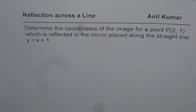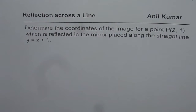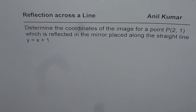I'm Adil Kumar. We are trying to explore how to find the image of a point when it is reflected across a line, and this line is not a vertical or a horizontal line. The question here is: determine the coordinates of the image for a point P which is reflected in the mirror placed along the straight line y equals x plus 1.